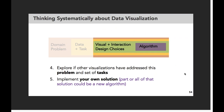The last part to mention briefly is that part of a visualization solution could also be an algorithm. One example: if you're showing a network and it's a hairball, summarizing that hairball visually or graphically is an example of a way to use an algorithm. Depending on your background, algorithm might be the part you touch upon the least — whereas the other three steps of domain problems, data and tasks, and visual interactive design choices are things you may encounter more frequently in different kinds of tools you're using to visualize data.